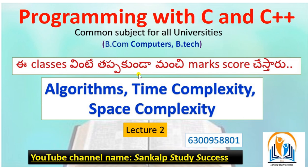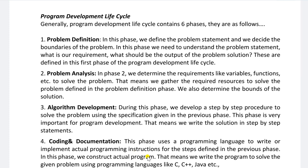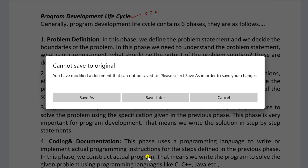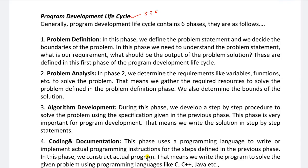When you get a question on Algorithm, you have to write about Time Complexity as well as Space Complexity in the answer. Before explaining Algorithms, let us discuss a small topic: the Program Development Life Cycle. This is a very important question worth 5 marks, 7 marks, or 8 marks depending on the university.